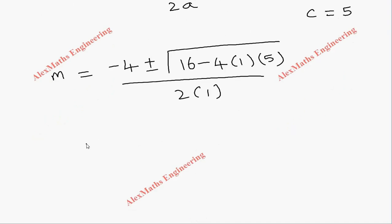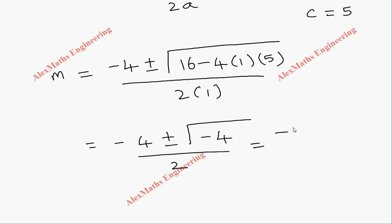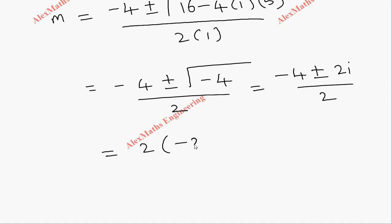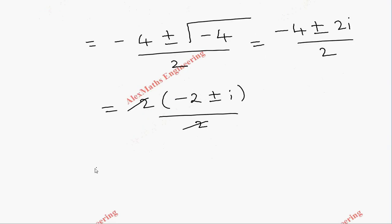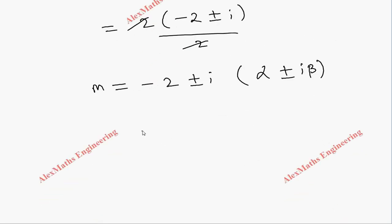We get m = (-4 ± √(-4)) / 2, which simplifies to (-4 ± 2i) / 2. Taking 2 common in the numerator and cancelling, we get m = -2 ± i. These are imaginary roots of the form α ± iβ. By comparison, α = -2 and β = 1.